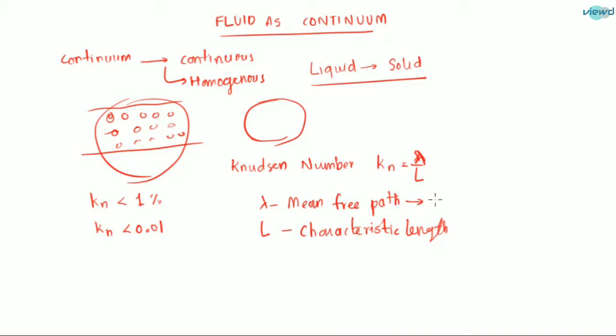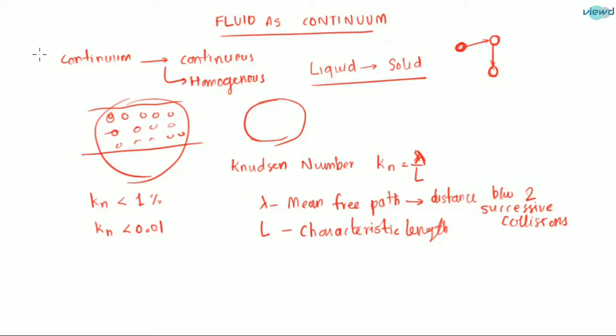So what is mean free path? Mean free path is the distance travelled between two successive collisions. The particles of the fluid collide with one another. For example, let us take this particle colliding with another particle — after colliding, it travels in some other direction until it hits another particle. This distance travelled is the free path of that particle.